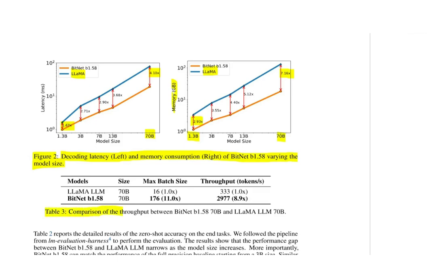In this table we have a comparison of the throughput between BitNet and LLaMA for 70 billion parameters. You can see that while LLaMA can handle only a batch size of 16, BitNet can handle a batch size of 176. Throughput which is measured in tokens per second is 333 for LLaMA and 2977 for BitNet, which is an increase of 8.9 times.